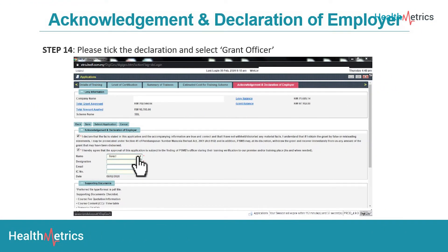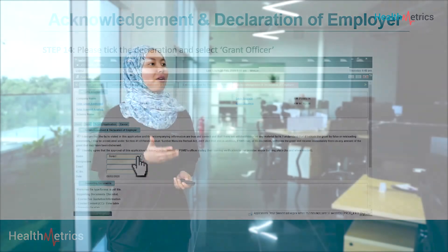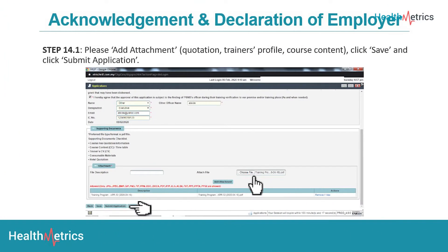We are almost at the end of the application process, now at the Acknowledgement and Declaration of Employer section. For step 14, please take the declaration and select the grant officer. For step 14.1, please add the required attachments, which consist of the quotation, trainer's profile, and course content. Then proceed to click Save and click Submit Application.